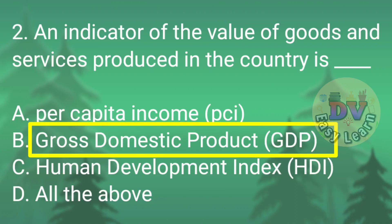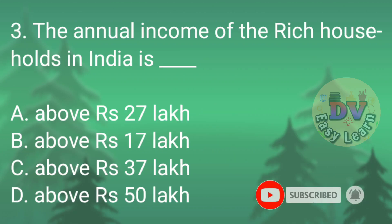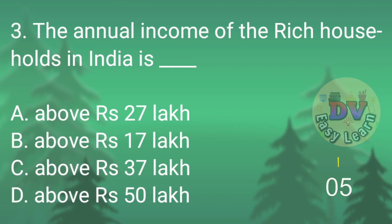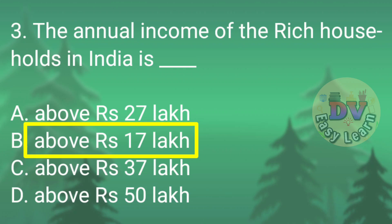Question No. 3: Gross Domestic Product. Question No. 3: The annual income of the rich households in India is? Correct answer: Above Rs. 17 lakh per annum.